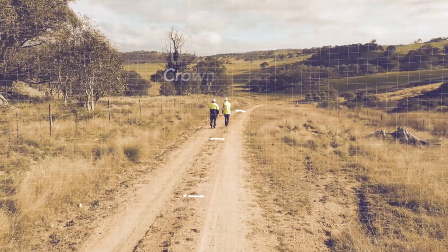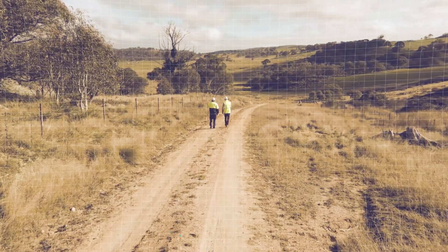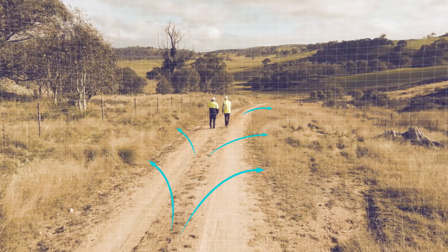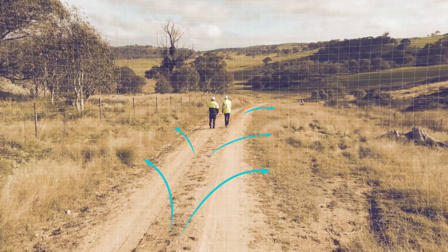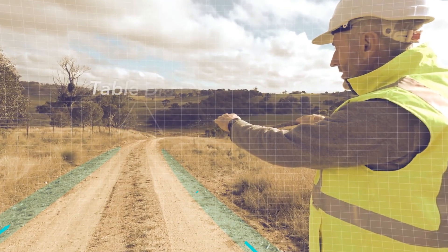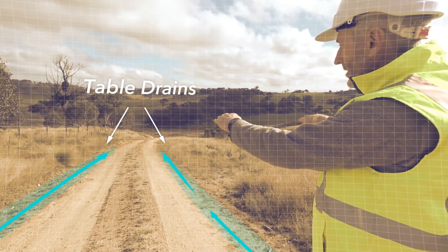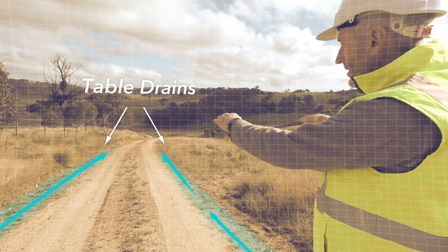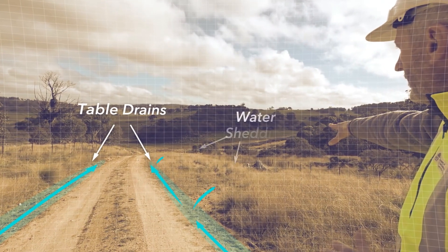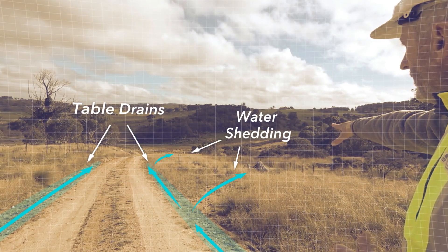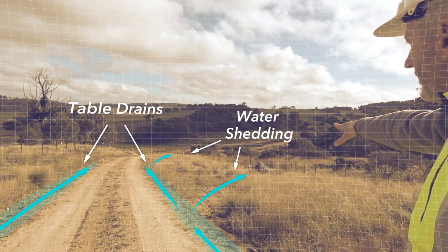We can see here how the road is well crowned, so the water that's running down the track will actually shed to either side. It's picked up on either side by the table drain which then runs along the side of the track. On this side here the water is actually shedding onto the hill slope directly, so that's a good thing.